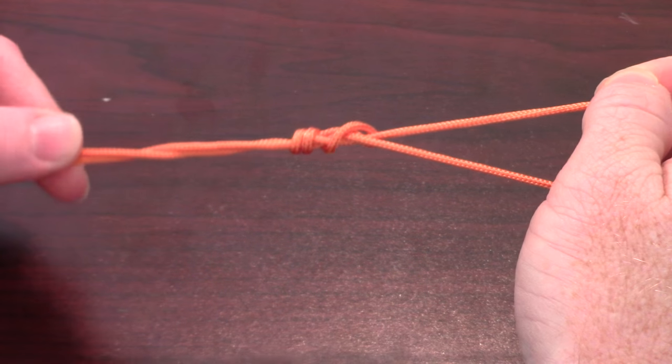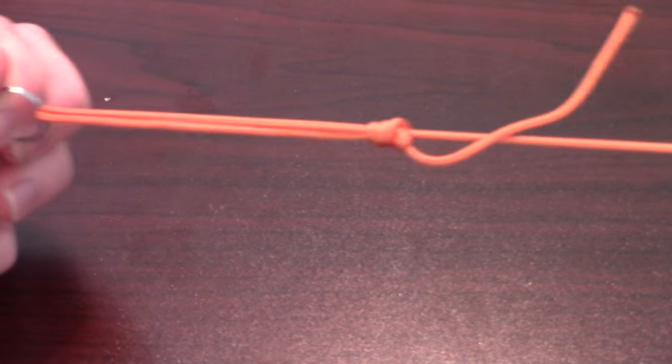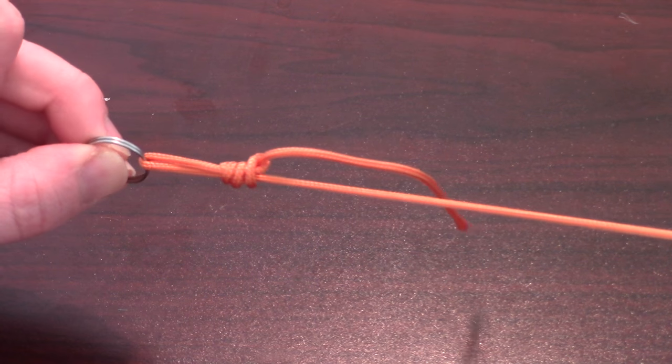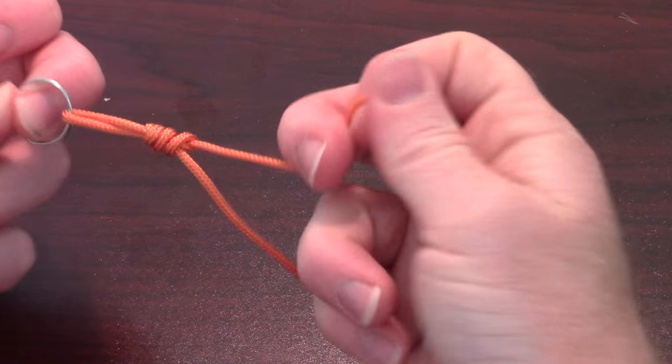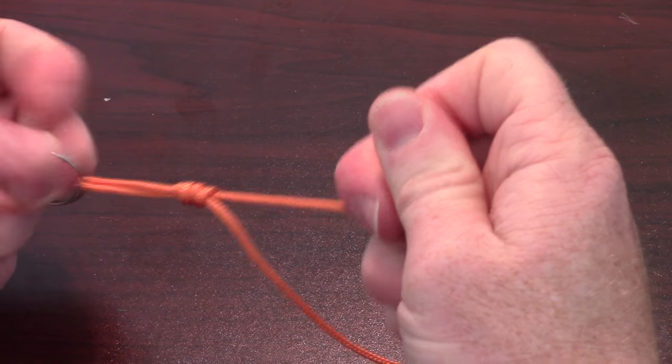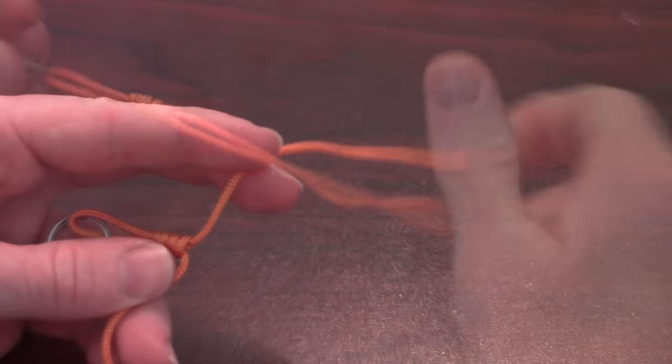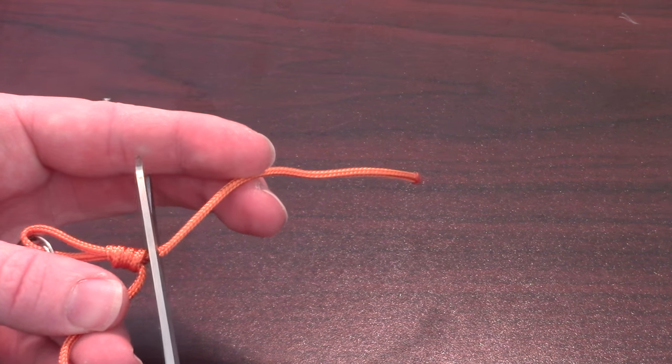Pull on the tag end softly just enough to bring the knot together. Then pull on the main line to close the loop to just the size you want. Pull tightly on the tag end to stop the knot from slipping. Then you can cut off the tag end close to the knot.